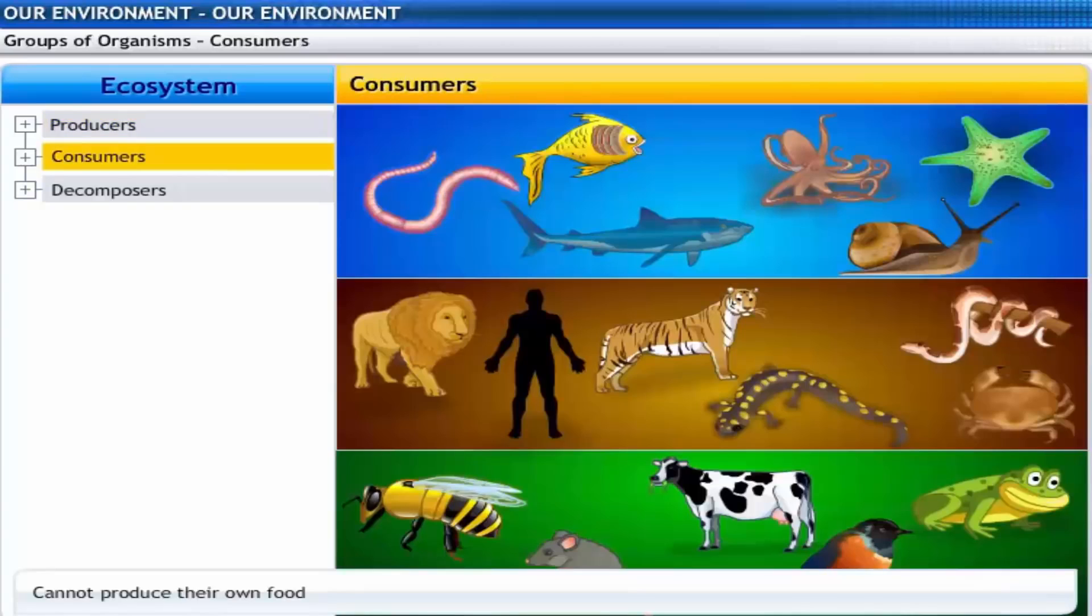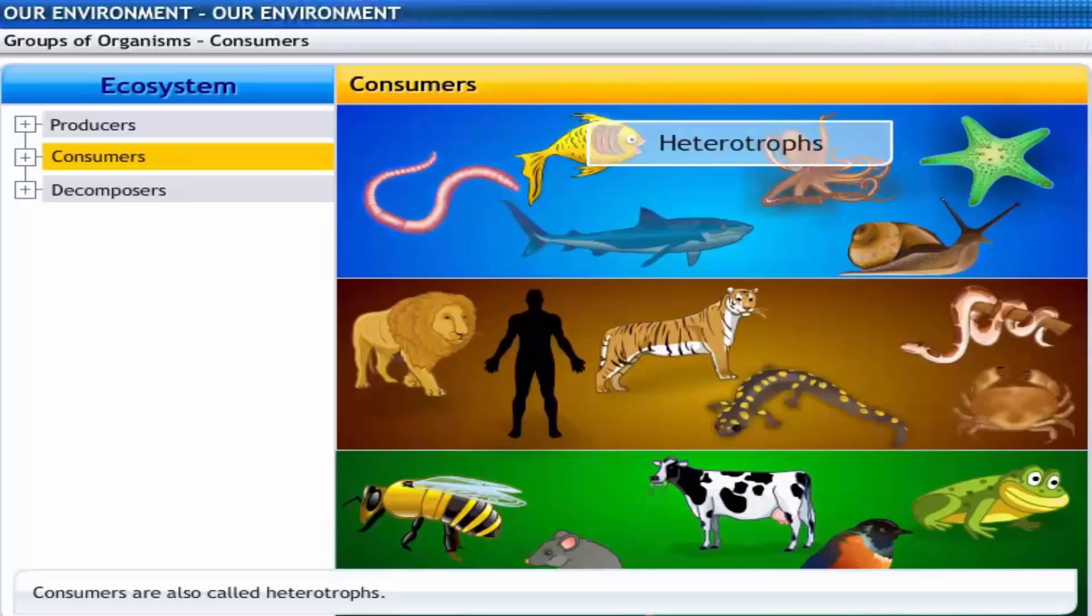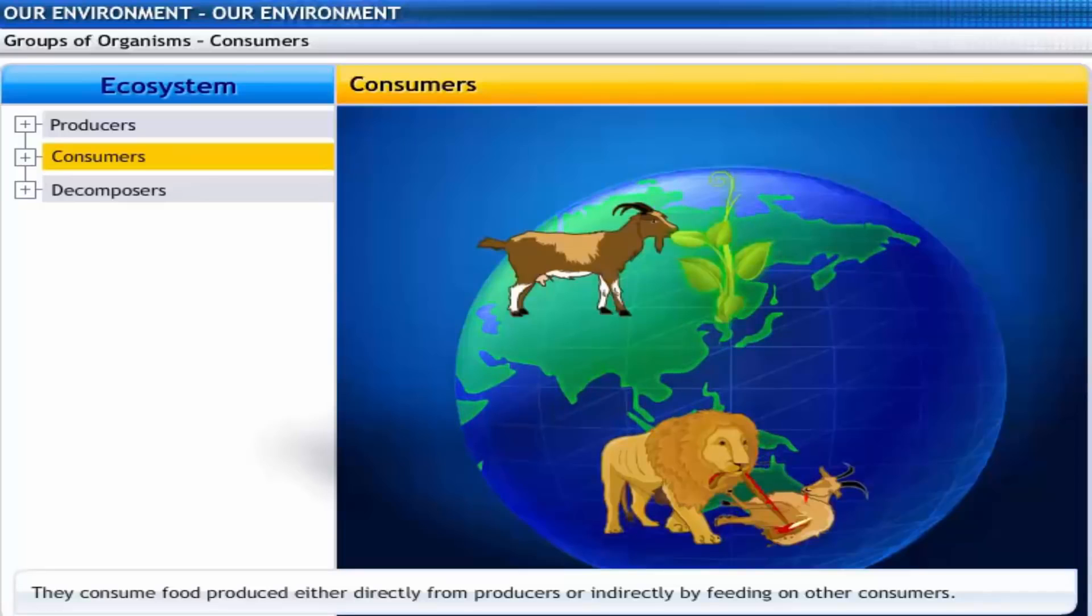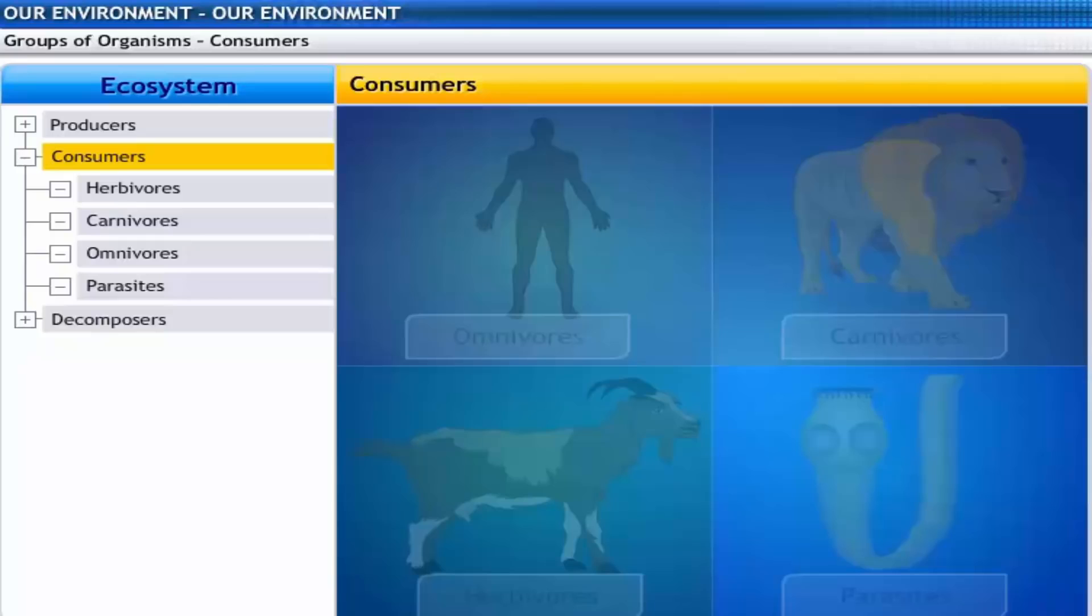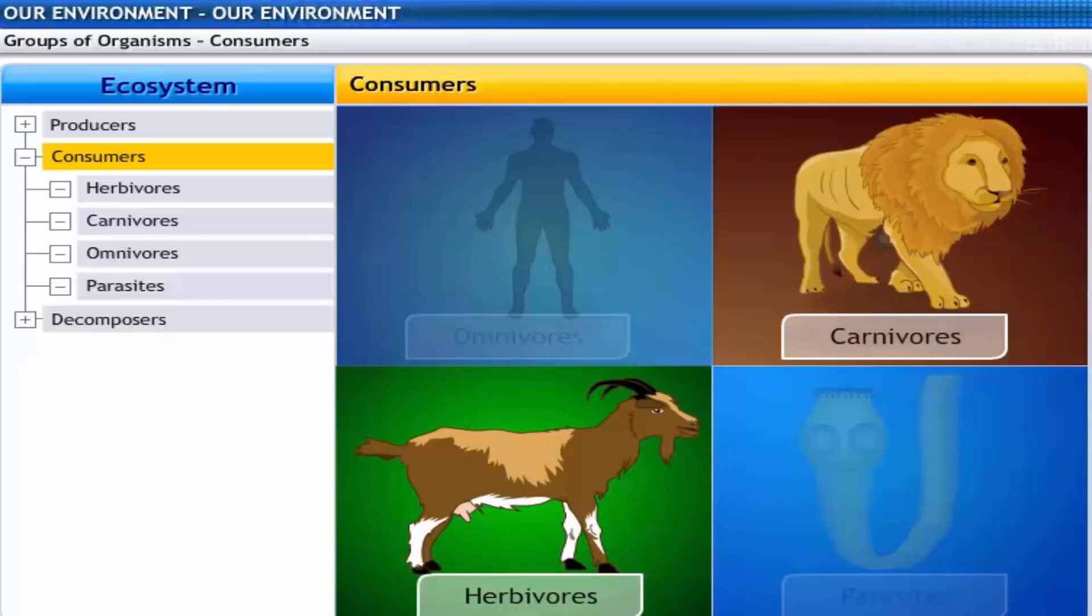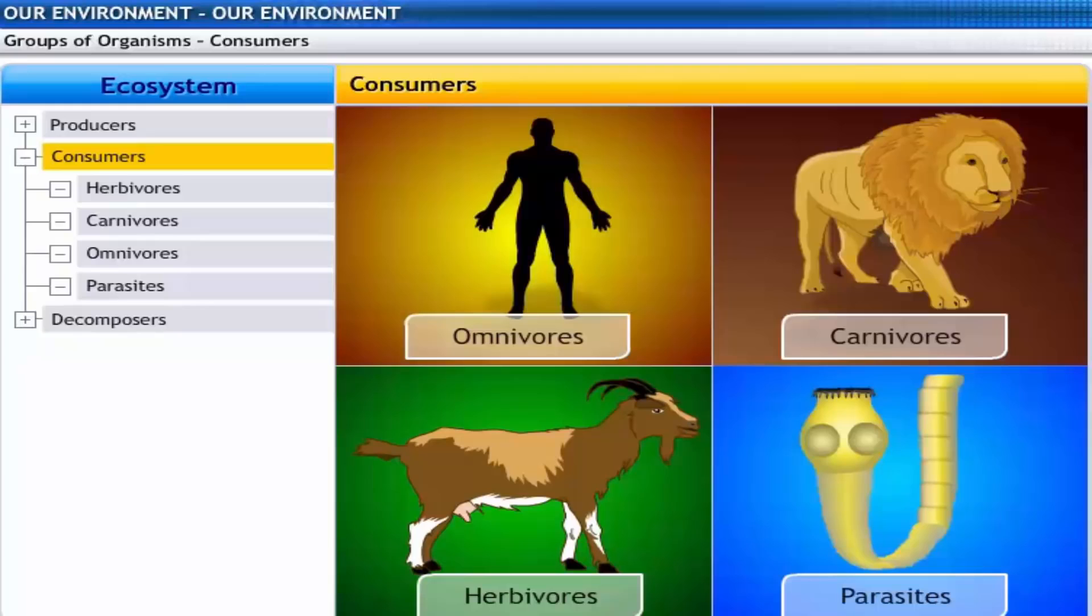Consumers are organisms that cannot produce their own food and depend on producers for their food. Consumers are known as heterotrophs. They depend on autotrophs for their food. These organisms consume the food produced either directly from the producers or indirectly by feeding on other consumers. Consumers can be classified as herbivores, carnivores, omnivores, and parasites.